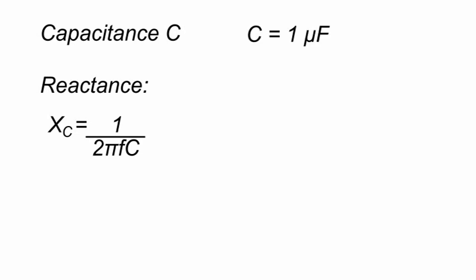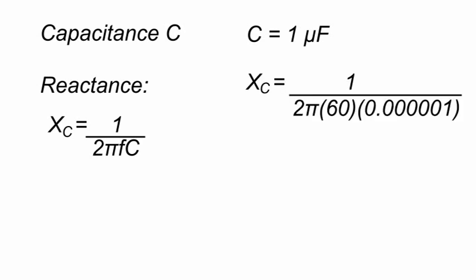The reactance is given by 1 divided by 2π times the frequency times the capacitance. For example, for a capacitor of 1 microfarad, the capacitive reactance is 2651 ohms.